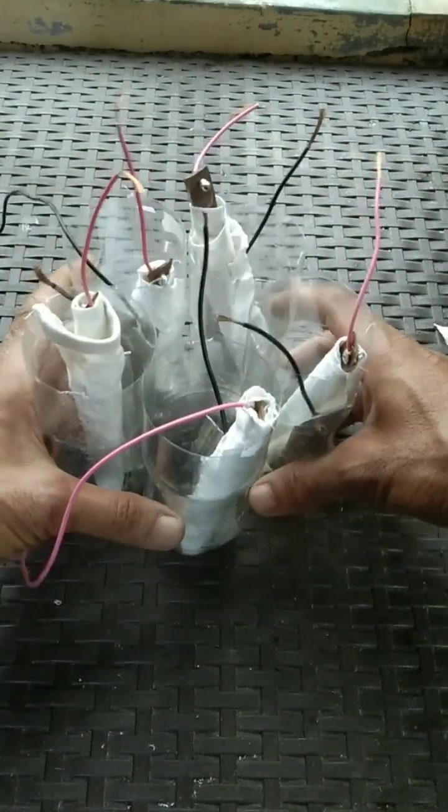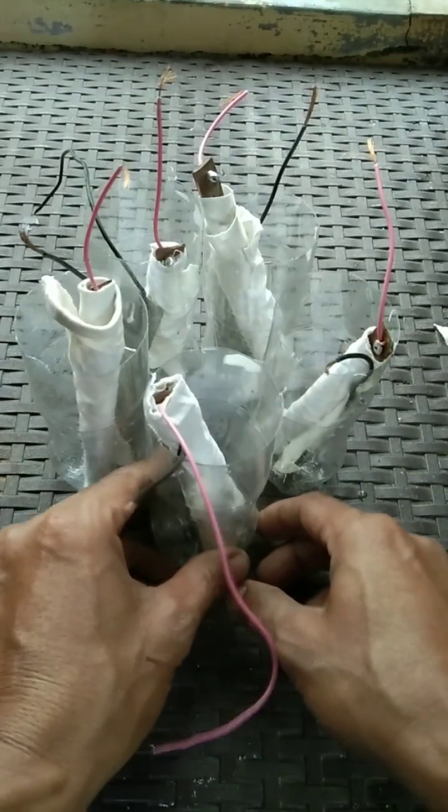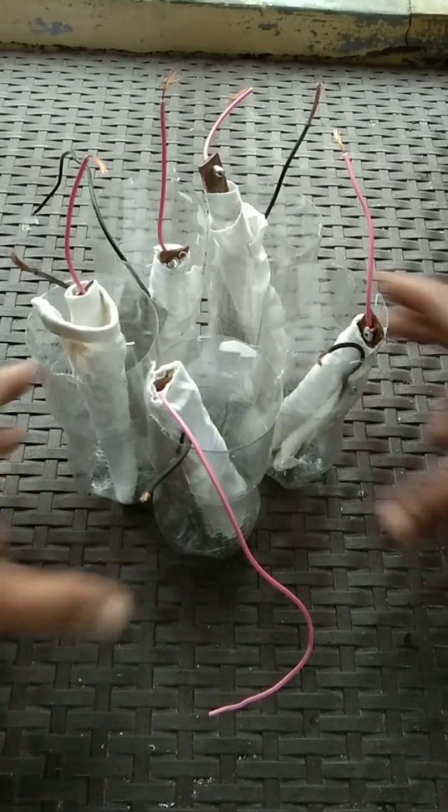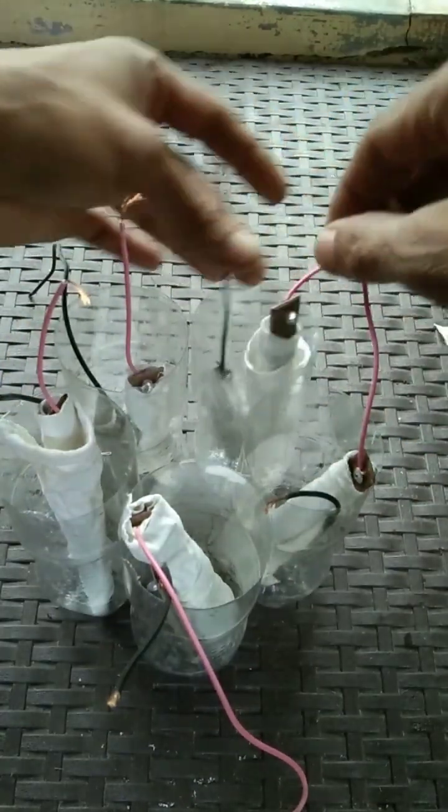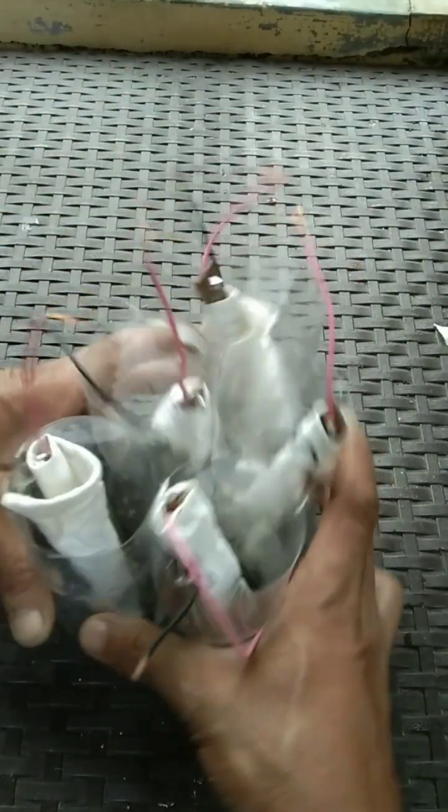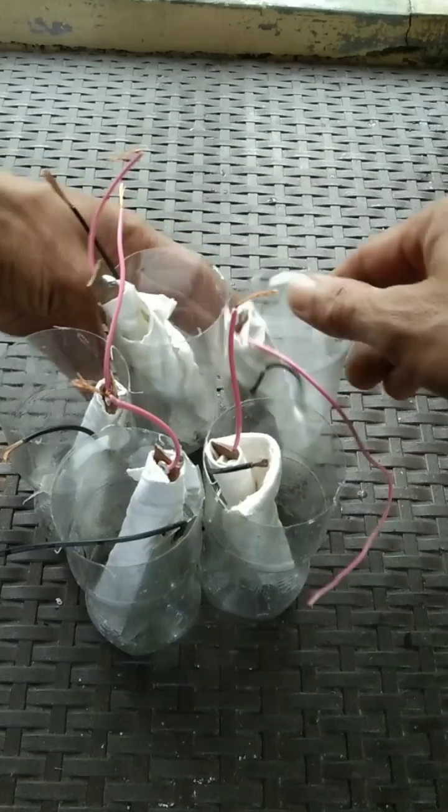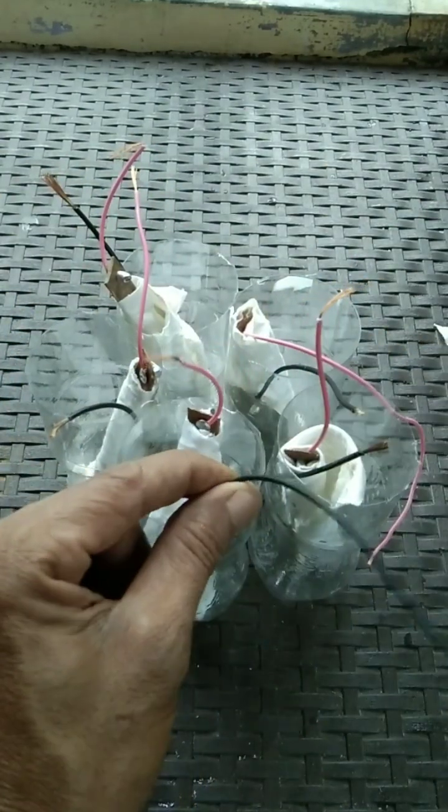And there you have it guys. Now we have five cells, five containers. Now we are going to connect all the wires in series connection. Series connection is from negative to positive, from the aluminum to the copper to the next container.